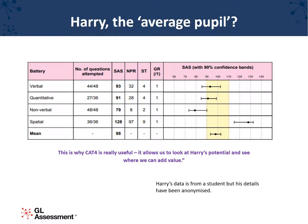His spatial reasoning score was significantly higher than his other scores at 128. He also has a significant weakness — his non-verbal score is only 79. If his teacher can highlight his spatial skills, perhaps get him to take the lead on a relevant project, his confidence in all areas may grow. This is why CAT4 is really useful — it allows us to look at his potential and see where we can add value.